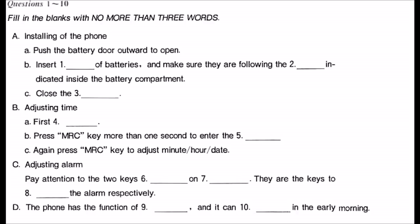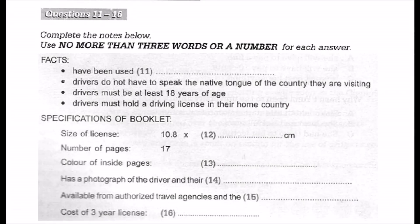That's the end of section one. You will have half a minute to check your answers. Now turn to section two of your listening question booklet. Section two. You will hear Inspector Jack Dunn talking about international driver's licenses at an information session for international travelers. As you listen to the first part of the talk, answer questions 11 to 16. Before you listen, look at questions 11 to 16.